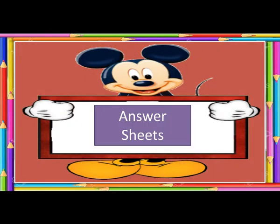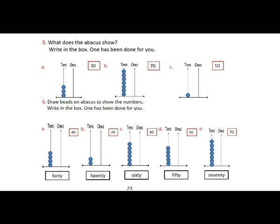Now tell your answers with the answer sheets. Page number twenty-three, question number five: what does the abacus show? Part A is thirty, part B is seventy, part C is ten. Question number six: draw beads on the abacus to show the numbers. Part A is forty, part B is twenty, part C is sixty, part D is fifty, and part E is seventy.